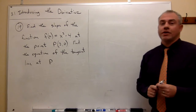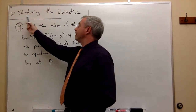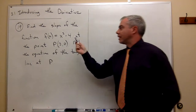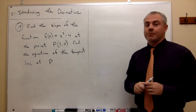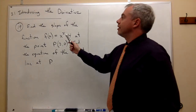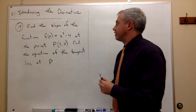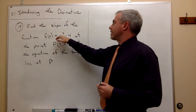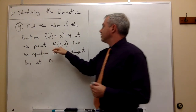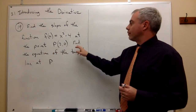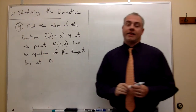Welcome. In this video, I'll be talking about section 3.1, introducing the derivative, and specifically problem number 19. Problem number 19 asks us to find the slope of the function f(x) = x² - 4 at the point (2, 0). Then we want to find the equation of the tangent line at that point.